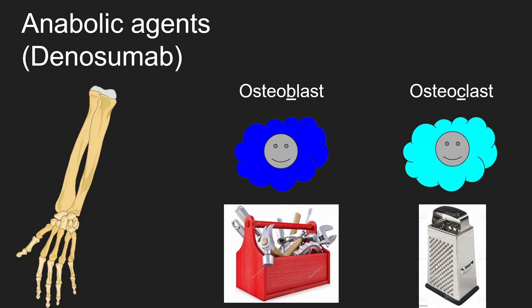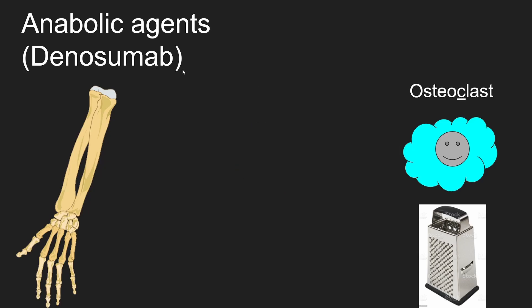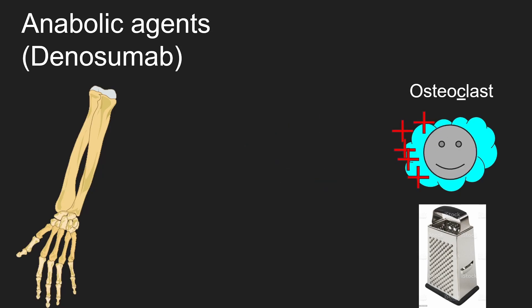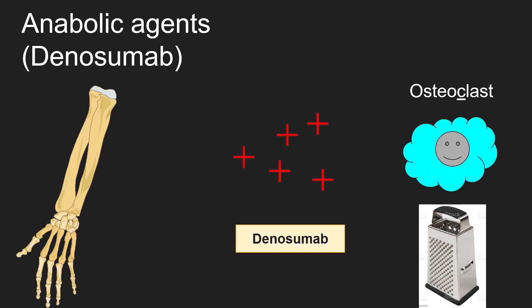Let's go into greater detail with the anabolic agents. The first one we'll cover is denosumab. Its influence is on osteoclasts. The idea is that there are chemicals in the body that increase osteoclast activity, and denosumab comes in and prevents that from happening.